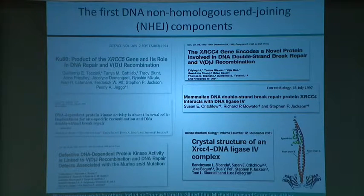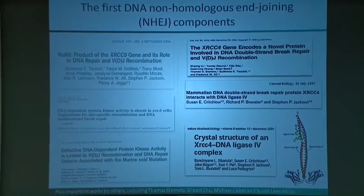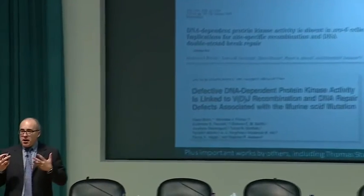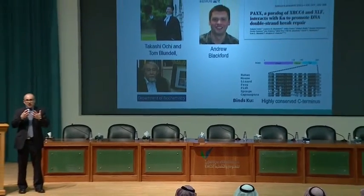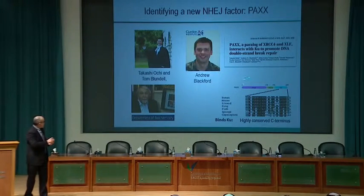With Tom Blundell in the Department of Biochemistry we determined crystal structures, showing XRCC4 as a dimer with DNA Ligase 4 binding to it. Over the years we thought we knew all the components of this DNA-PK/Ku-dependent repair system called non-homologous end joining (NHEJ). But very recently — published last year in Science in collaboration with Tom Blundell — postdoc Andrew Blackford in my lab identified a new protein called PAXX, which we think is the final piece of this jigsaw.